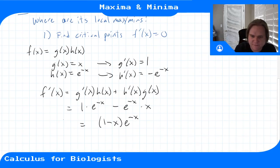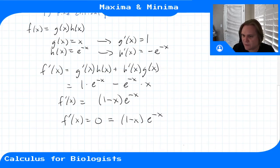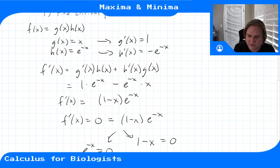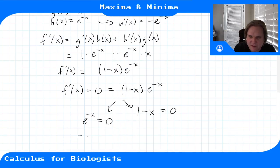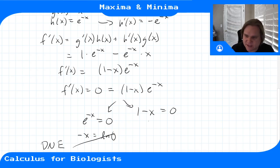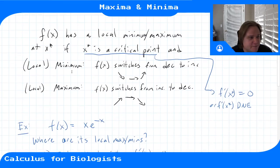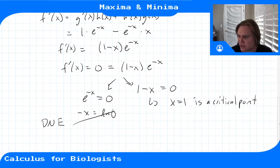Now where does f'(x) = (1-x)e^(-x) equal zero? Either (1-x) = 0 or e^(-x) = 0. For e^(-x) = 0, that means -x = ln(0), which doesn't exist — e to any power is never zero, it only asymptotes to zero. So the only solution is 1 - x = 0, giving x = 1. So x = 1 is a critical point of our function. To determine if it's a min or max, we check whether f is switching from decreasing to increasing or increasing to decreasing at that point.